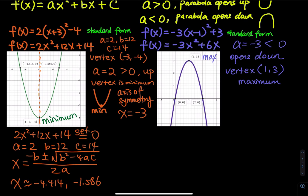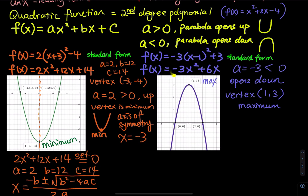Now the second example: f of x equals negative 3x squared plus 6x. The leading term is the term next to x squared, and the leading coefficient is negative 3. Since negative 3 is less than zero, the leading coefficient is negative, so the parabola opens down — that's why this is an upside-down parabola.